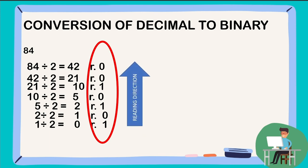Therefore, 84 in binary is written and read as 1010100.